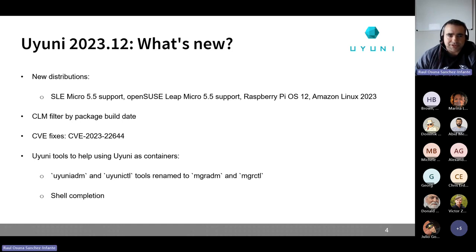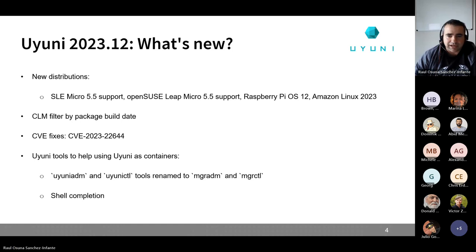In addition to the new releases, there is also a new feature for CLM: a filter by package build date. There is one important CVE that got fixed in this update. Also, the Uyuni tools used to help using Uyuni as containers - uyuni-adm and uyuni-cdl tools - were renamed to mgr-adm and mgr-cdl, to be unified with the enterprise product SUSE Manager. Shell completion was also added to those tools.